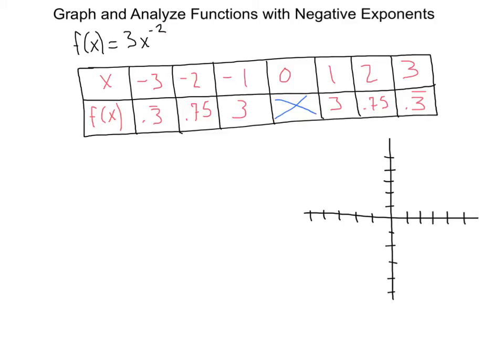Now if you have some trouble solving to get your x and f of x values when you make your table, remember f of x equals 3x to the negative 2 is the same as 3 over x squared.